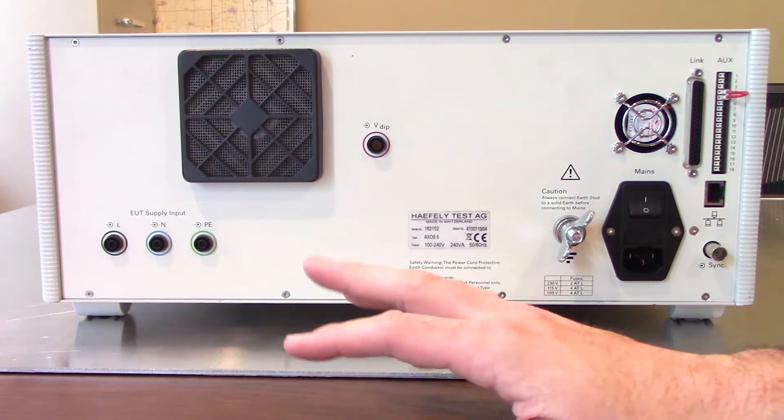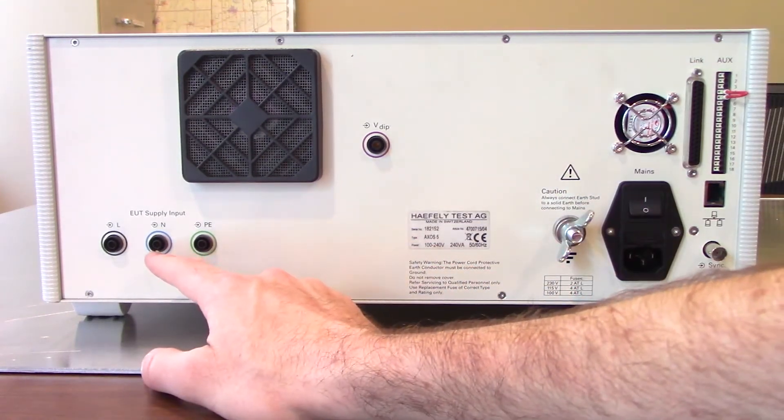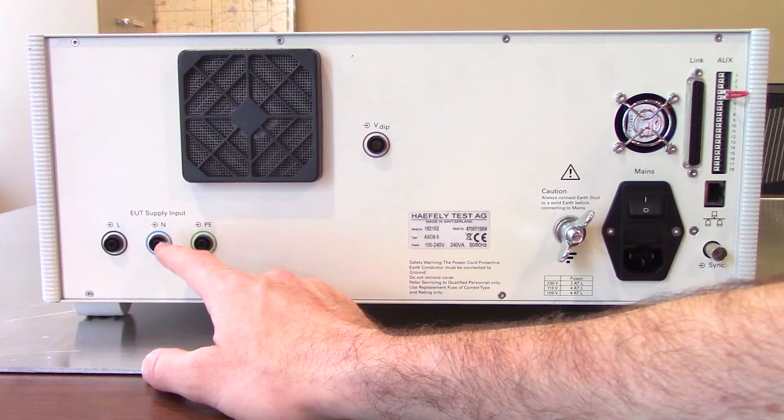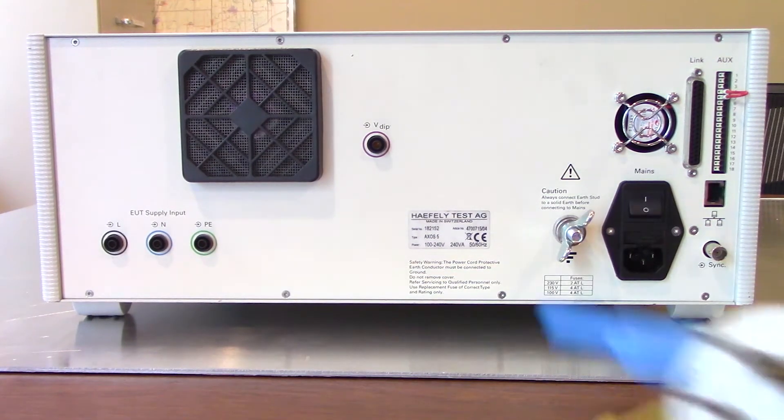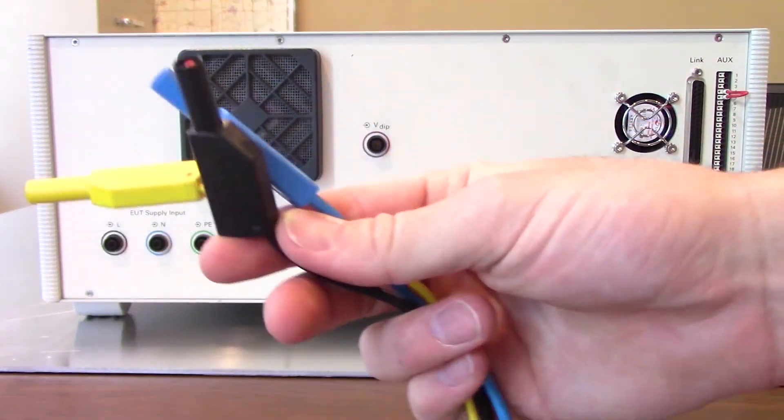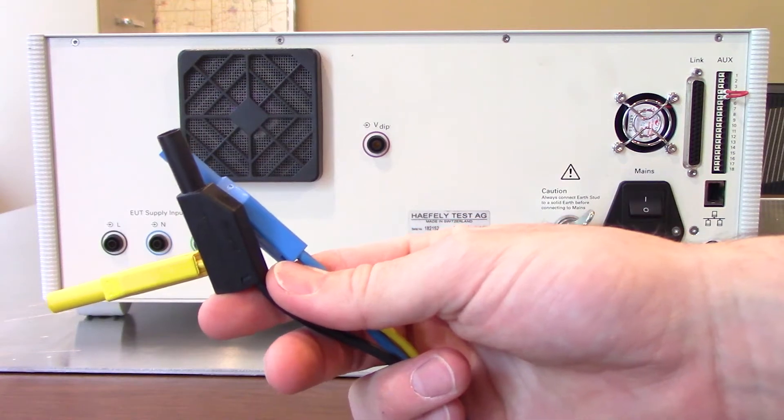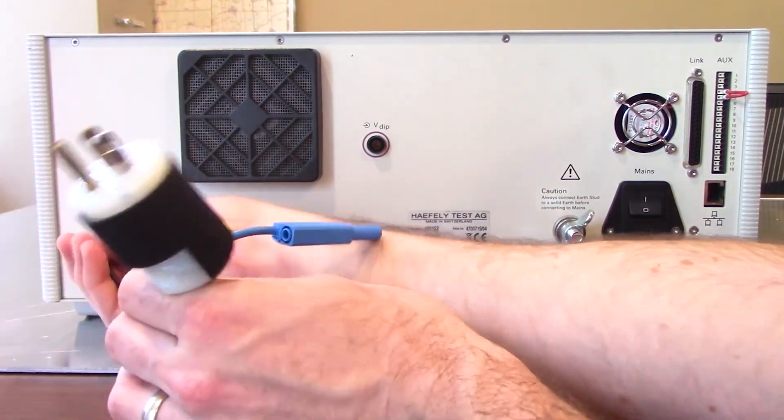So all we've done so far is just turn the Haefeli test system around. Looking in the back side of the lower right hand corner here, you will see your EUT supply input. You notice the same style of connectors is on the front. One of the cables that is included with the rental is going to be your male NEMA style adapter as well as your banana jack connectors right there. So we're going to go ahead and connect those to the correct associated ports right there on the system.